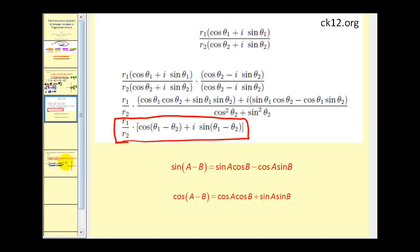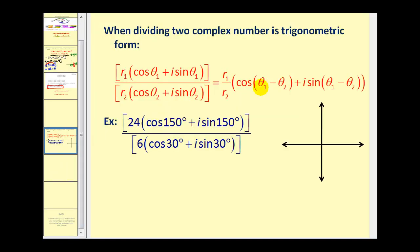Let's give it a try. Again, here's our formula. So this will be equal to 24 divided by six. That would be four times cosine of the difference of the angles. Notice it's the numerator minus the denominator. So 150 degrees minus 30 degrees will be 120 degrees plus i sine of 120 degrees.